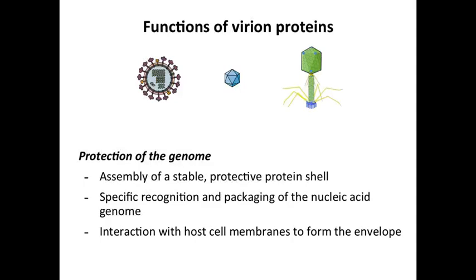Virion proteins — the proteins that make up the virion, the capsid, those embedded in the envelope — have very specific functions. They're there to protect the genome. One function is to be a stable shell that protects it, because viruses spend a lot of their time traveling between hosts or between cells. During assembly of new virus particles, the virion proteins have to recognize the nucleic acid and package it. For enveloped viruses, the structural proteins also have to participate in acquiring that envelope during maturation.